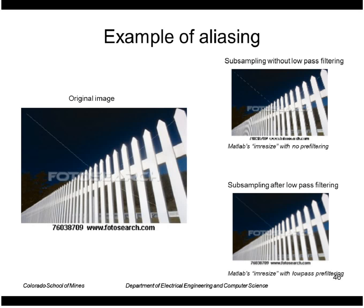Another example. We have high frequency as we get in this part of the image. Subsampling and reconstructing without low-pass filtering yields aliasing here. But if we do low-pass the image first and then subsample and reconstruct then we don't have aliasing here.